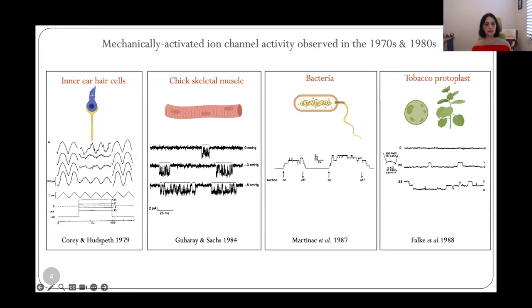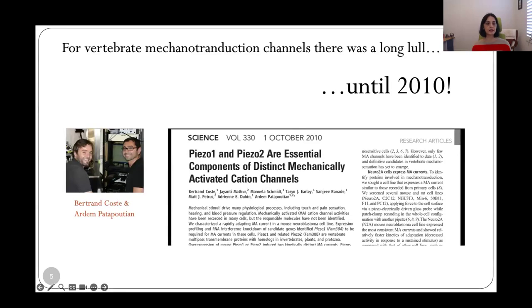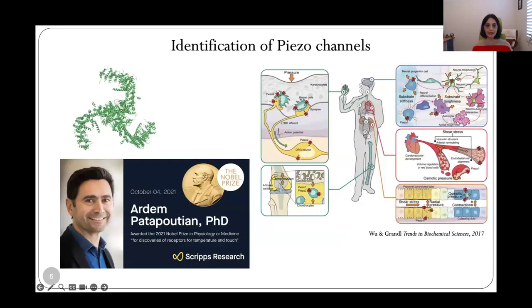In bacteria and plants, within a few years of the identification of the current, the molecular identity of the channels, the proteins, was known. But for the vertebrate channels, it took a long time. It took another 30 years before the first excitatory mechanically activated channel family was identified, the Piezo channel family by Ardem Patapoutian's lab. And over the next decade or so since the channels were discovered, they've emerged to be really important for a variety of physiological processes across the body. And in recognition of the importance and impact of this discovery, Ardem Patapoutian was awarded the Nobel Prize a couple of years ago.